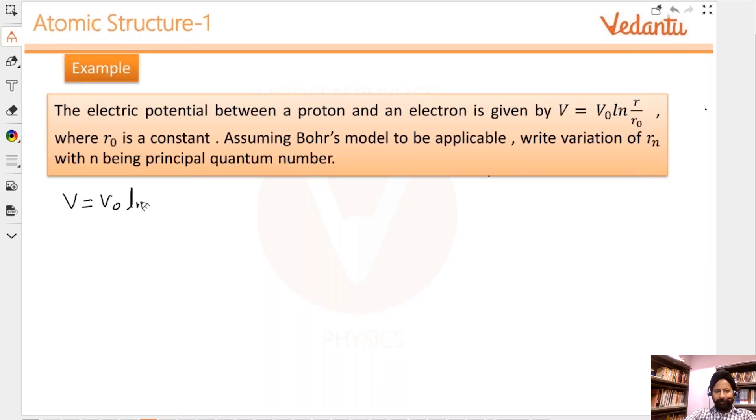This part is clear. Now when you're talking of an electron, it has some potential energy. Potential energy is e times the potential. If the amount of charge is e coulombs, the energy is eV₀ log(r/r₀).